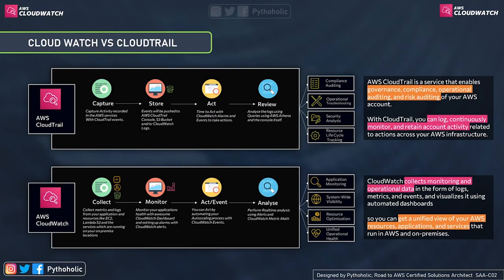To make the difference clear: if you need information about how an application is performing on an EC2 instance, you would use CloudWatch — integrating CloudWatch logs and event metrics to show how it's performing. On the other hand, if you need to see what operations are being performed by users and what activities are going on in your AWS account, you would use CloudTrail data to show the operational status of your AWS account for any time period you want.